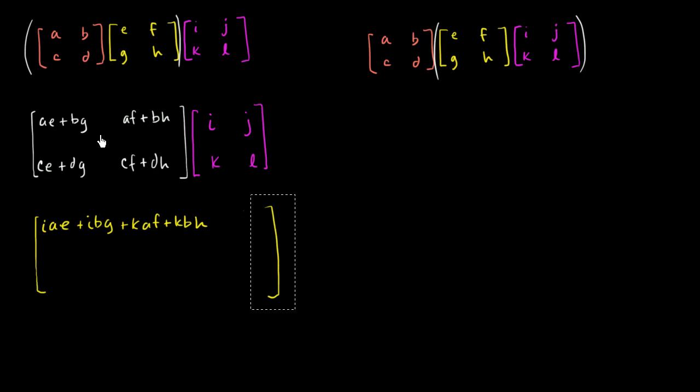So let me clear this. Let me just keep going. And then we're going to multiply this, essentially we're going to consider this row and this column. First row, second column. And so you are going to have JAE plus JBG plus LAF plus LBH.